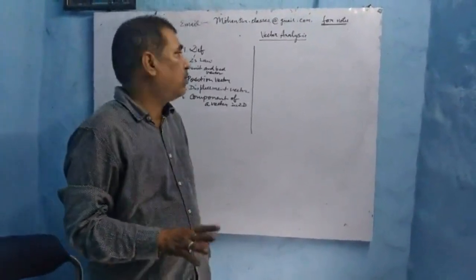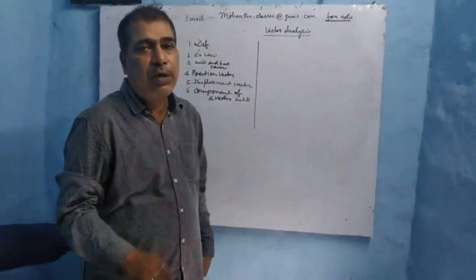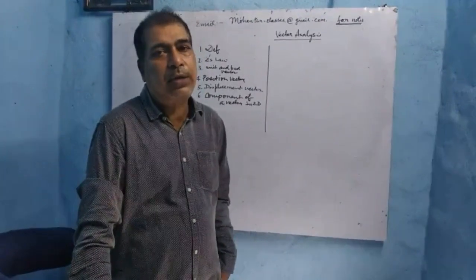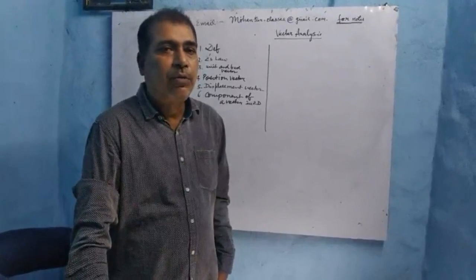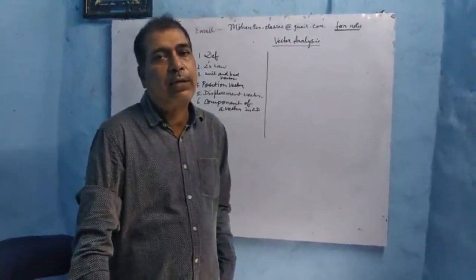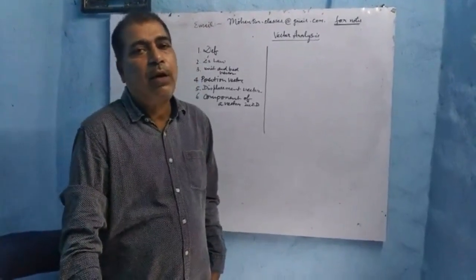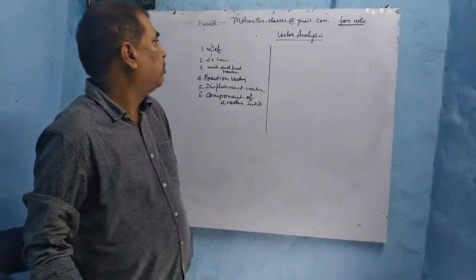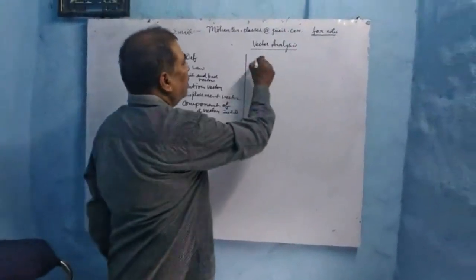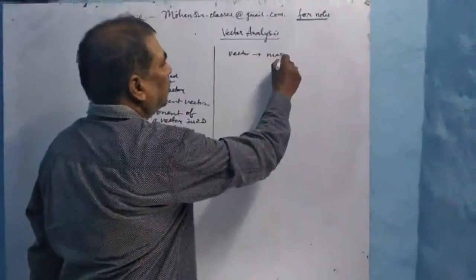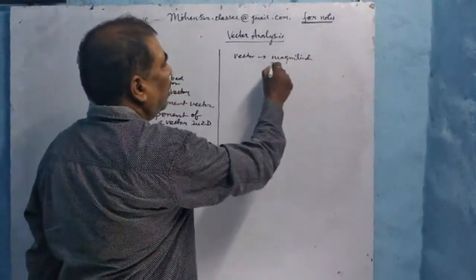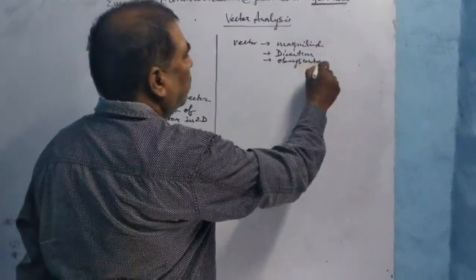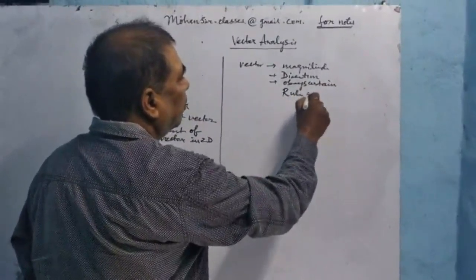Now I will teach you what is a Vector. It is a physical quantity which has direction, magnitude, and obeys the certain rule of vector addition — such as Triangle's Law, parallelogram law of vector addition, or any other vector law of addition concerned with this chapter. So, a vector has magnitude, direction, and obeys certain rules of vector addition.